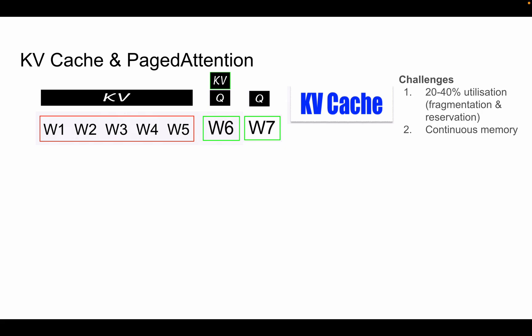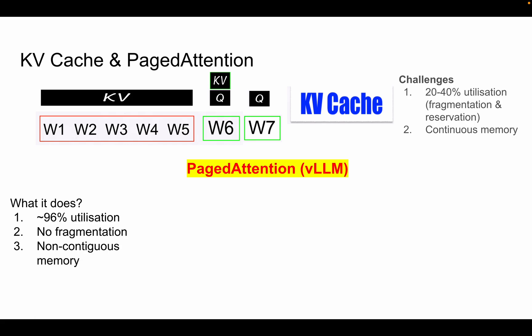Hello everyone, welcome to part 5 of LLM Jargons Explained. In the previous video we discussed how a KV cache works, where it is used, and what the major challenges are. In this video let's discuss PagedAttention, also called VLLM, which is a solution for those KV cache challenges. We have the 96% utilization problem, fragmentation, and non-continuous memory requirements — most of those challenges we could overcome.